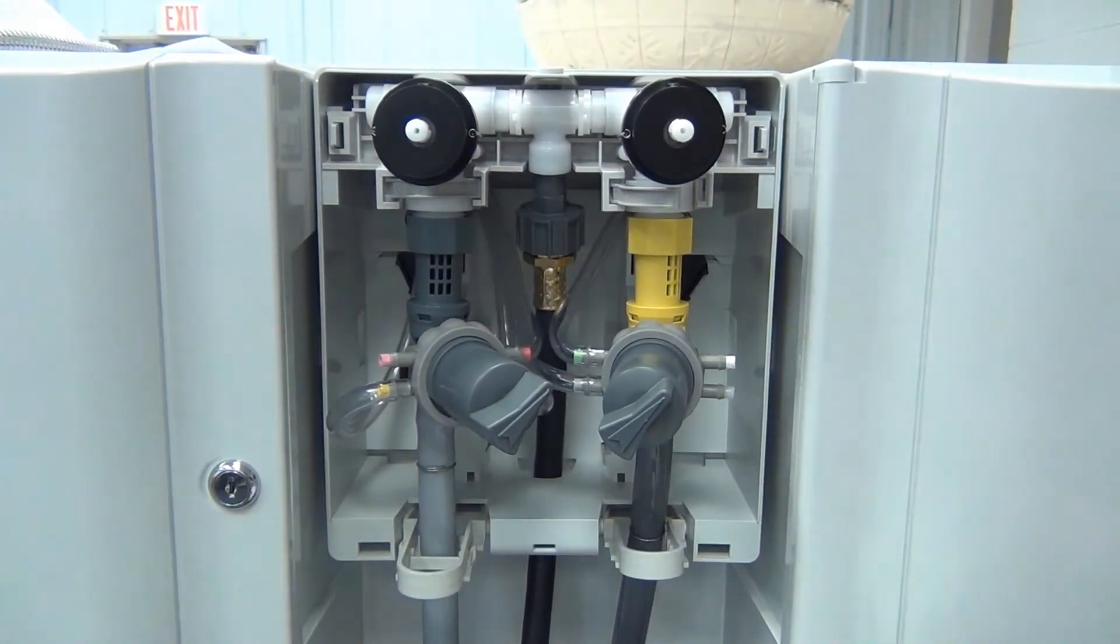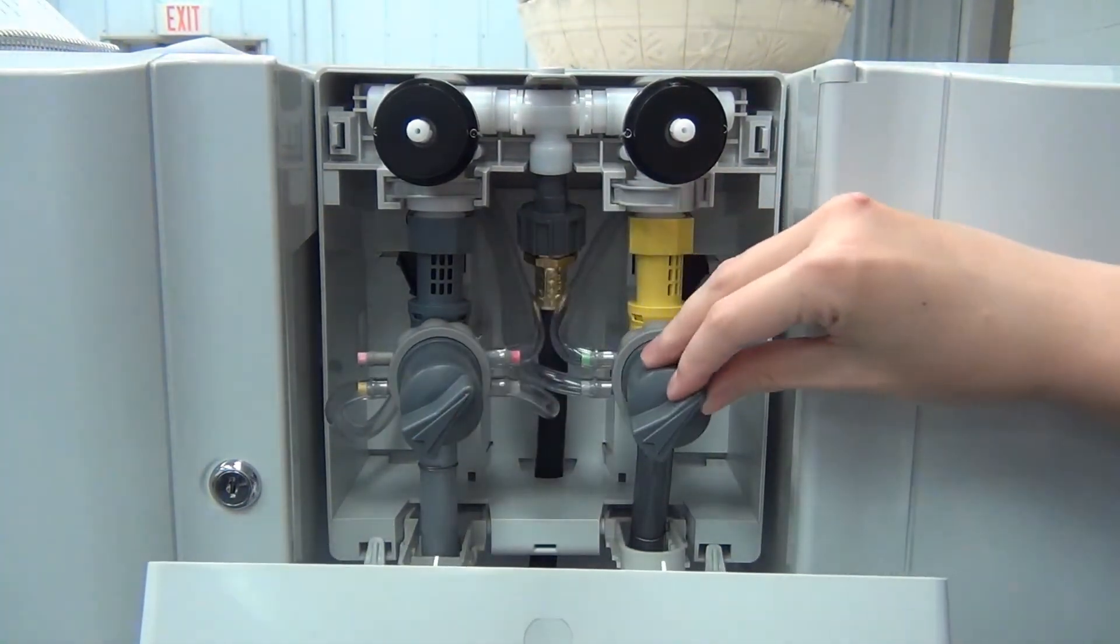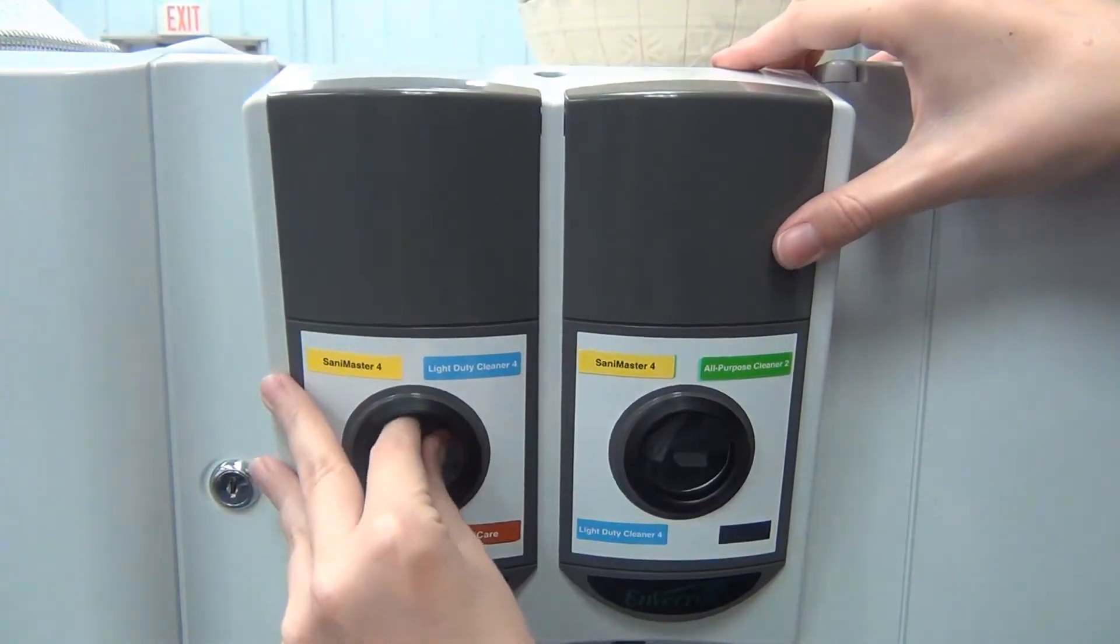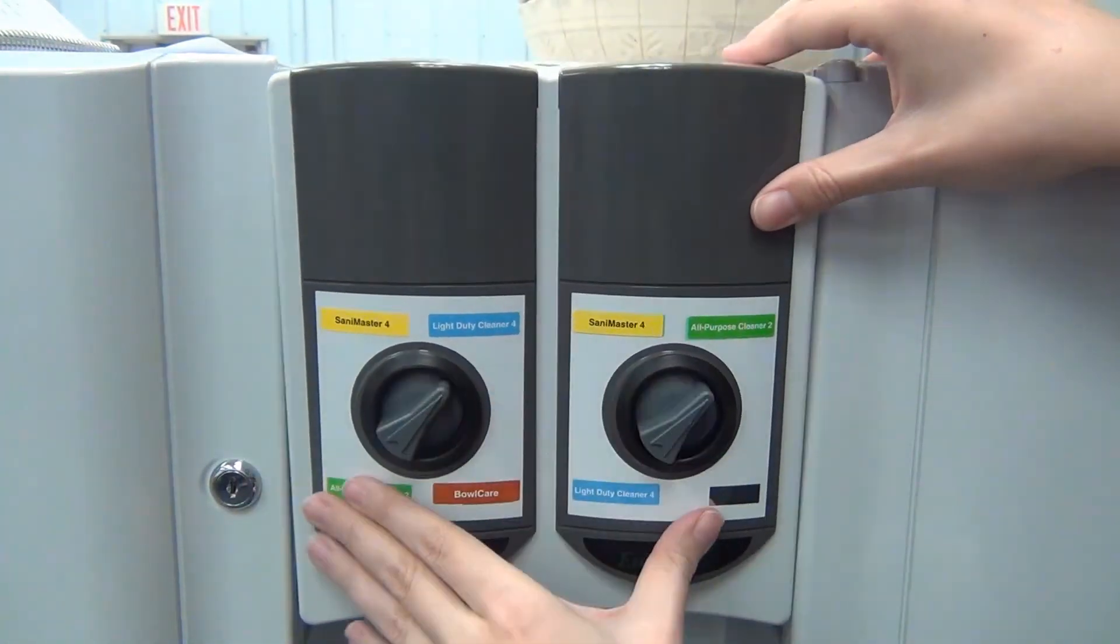To reinstall the cover, first line up the tabs on the bottom and then you may have to straighten out the selector knobs. Click the cover into place and you are ready to go.